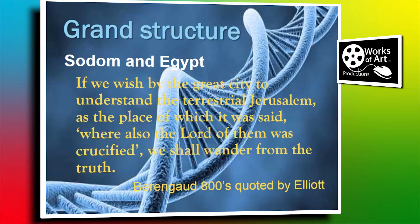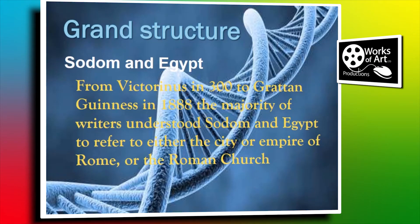Berengau in the 800s, quoted by Elliot's Horae, says: if we wish by the great city to understand the terrestrial Jerusalem, as the place of which it is said where also the Lord of them was crucified, we shall wander from the truth. In other words, we shouldn't identify it with Jerusalem. And looking at the historians from Victorianus in AD 300 to Graham Guinness in 1888, the majority of writers understand Sodom and Egypt to refer to either the city or the empire of Rome, or to the Roman church. As time goes on you get more and more consistency with writers identifying it as the Roman system.